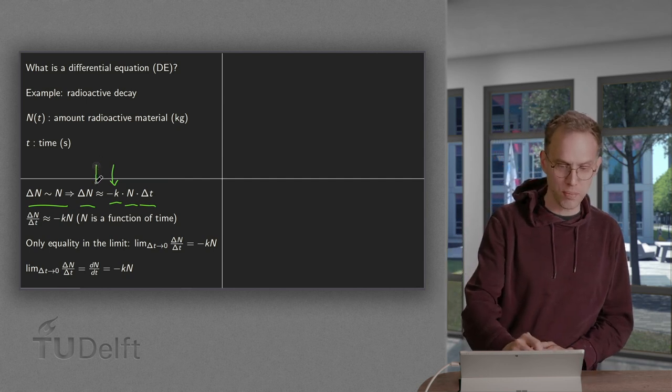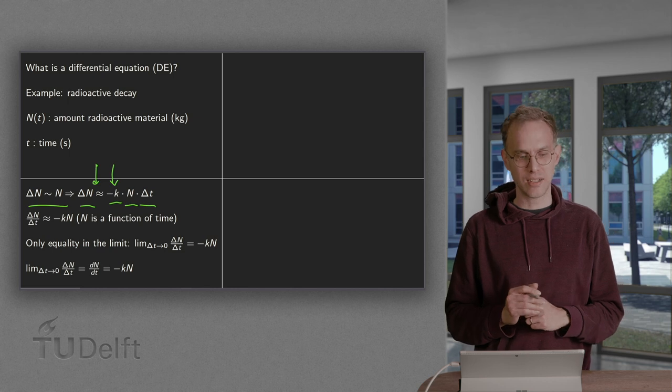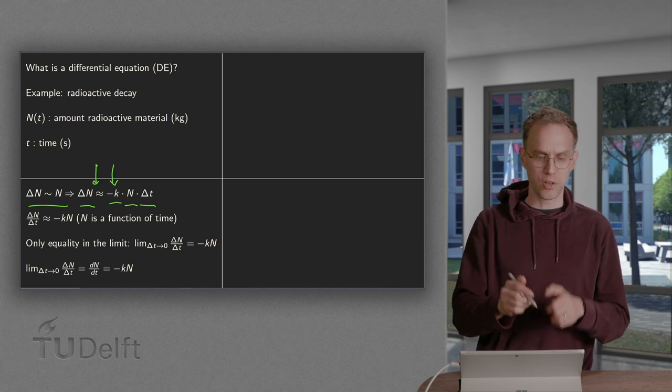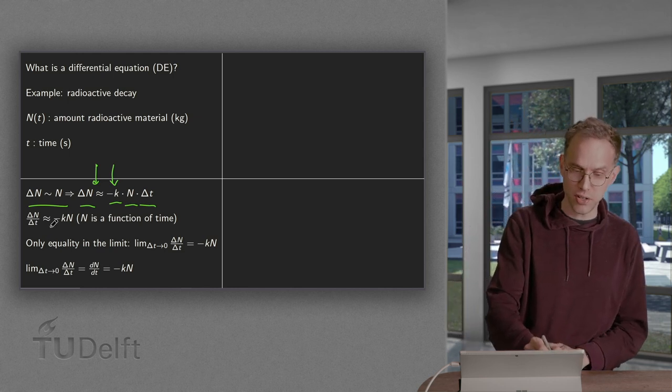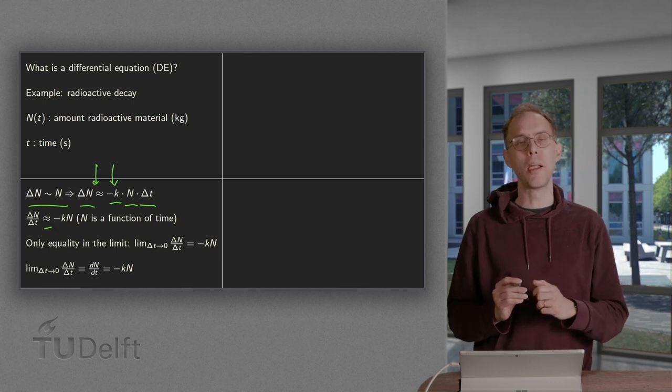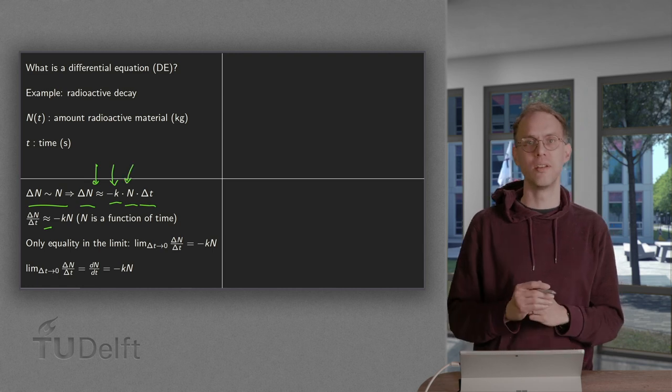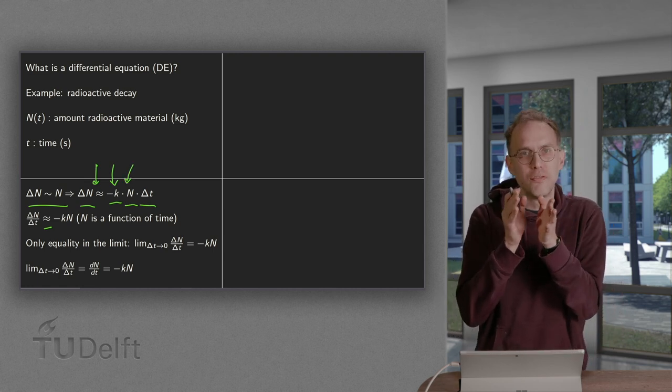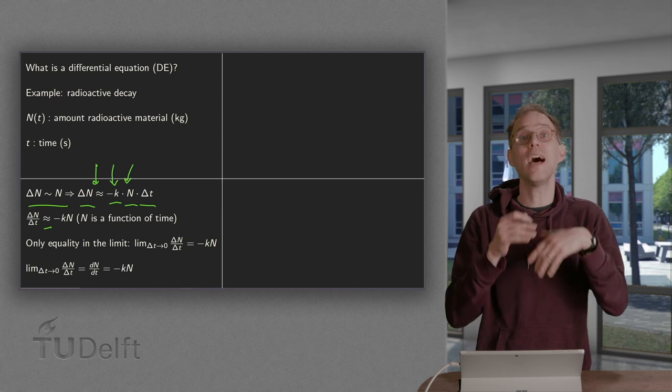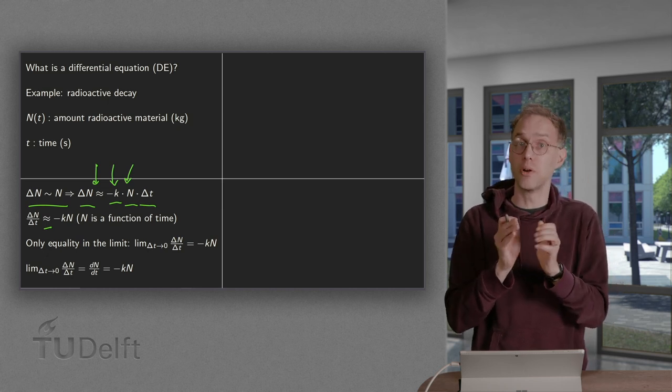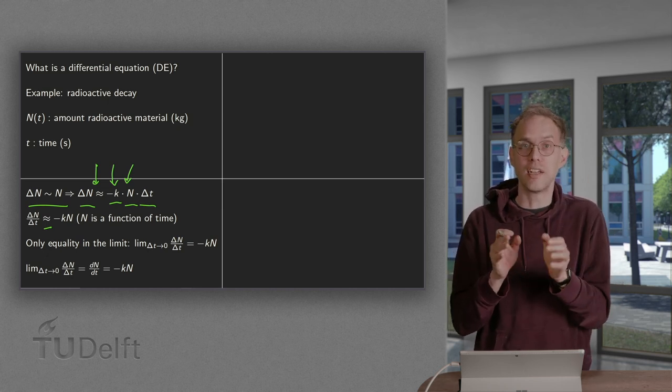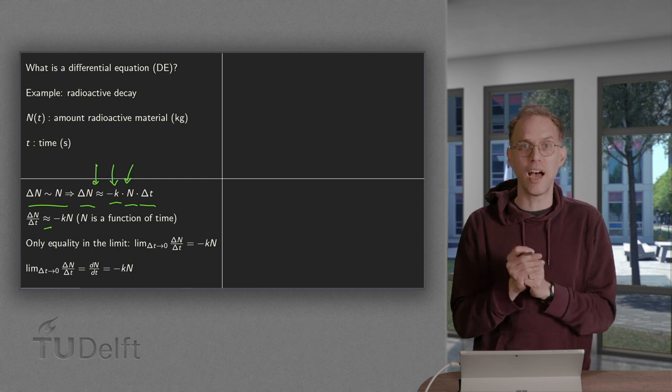Now we have this approximately equal. Why is that? We can, of course, divide by the delta T. We still have the approximately equal sign. Well, during the decay process, this capital N is changing. So only if delta T is very small, then this capital N is approximately constant. And then if we take delta T small enough, then we have equality.